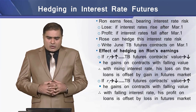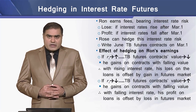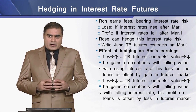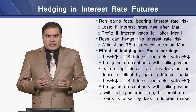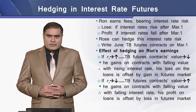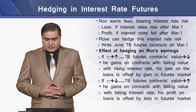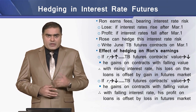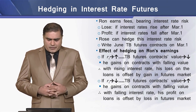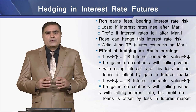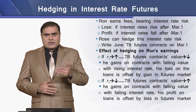Although Ron is earning certain fees for bearing the interest rate risk, there is still an unknown gain or loss. If the interest rate rises after May 1, he will be the loser; if the interest rate falls after May 1, he will be in profit. So Ron can hedge his interest rate position by writing Treasury Bond futures contracts on March 1.